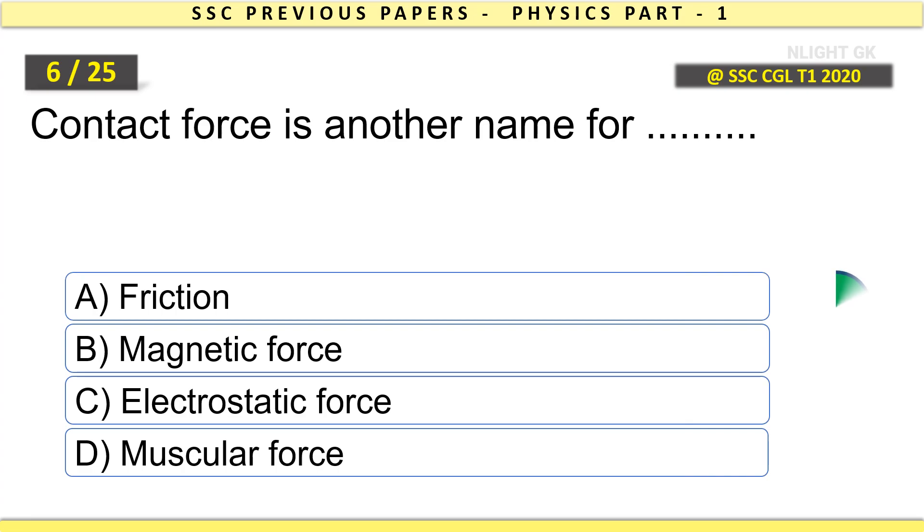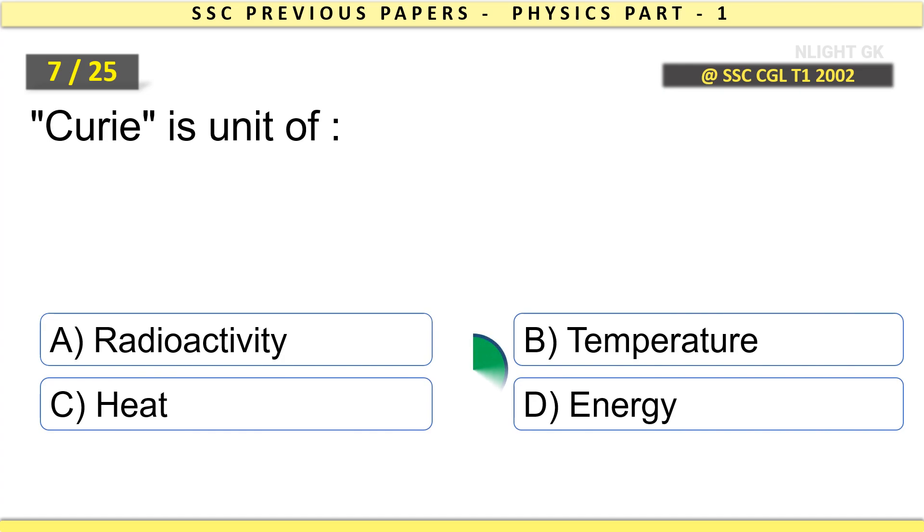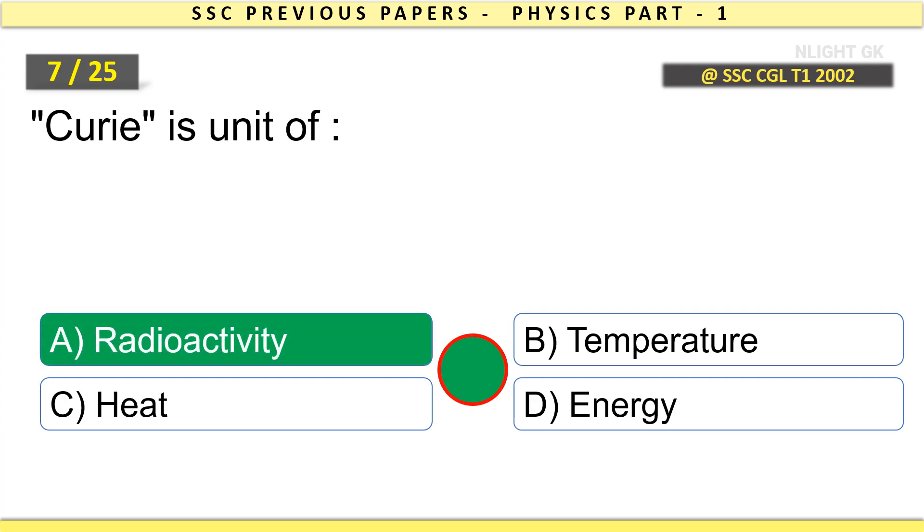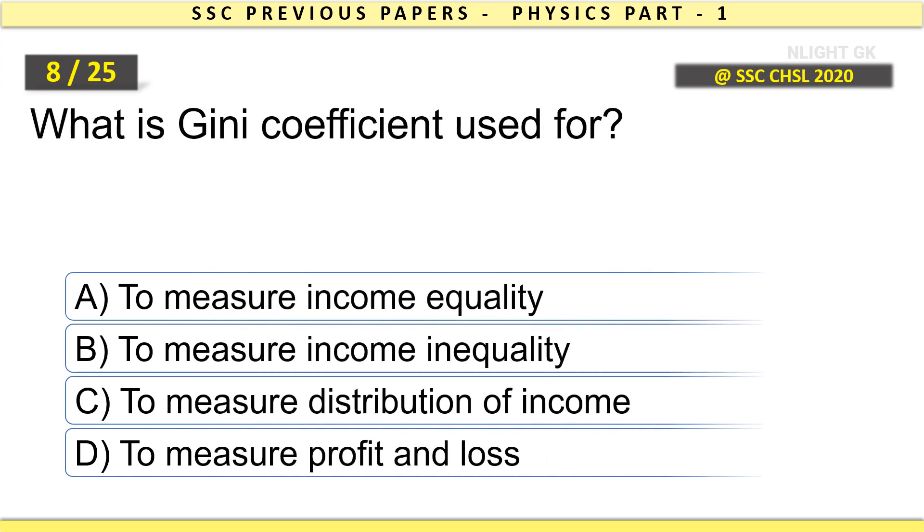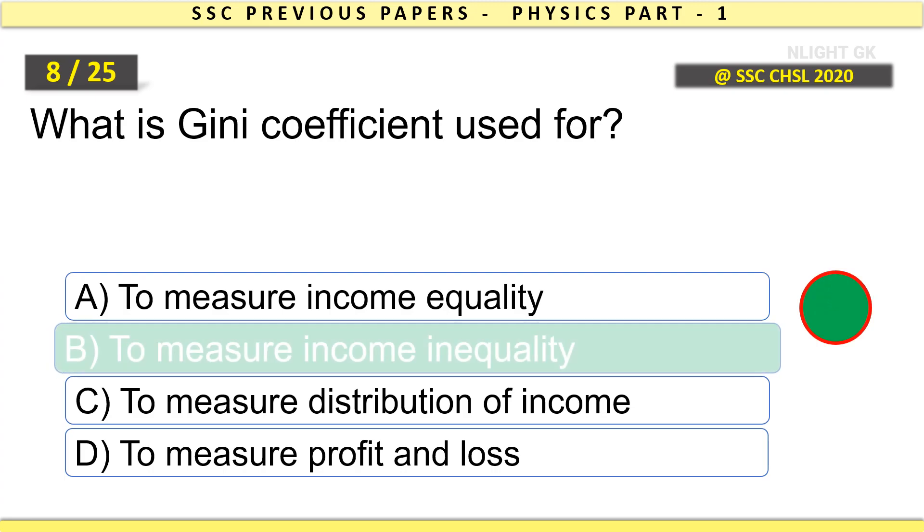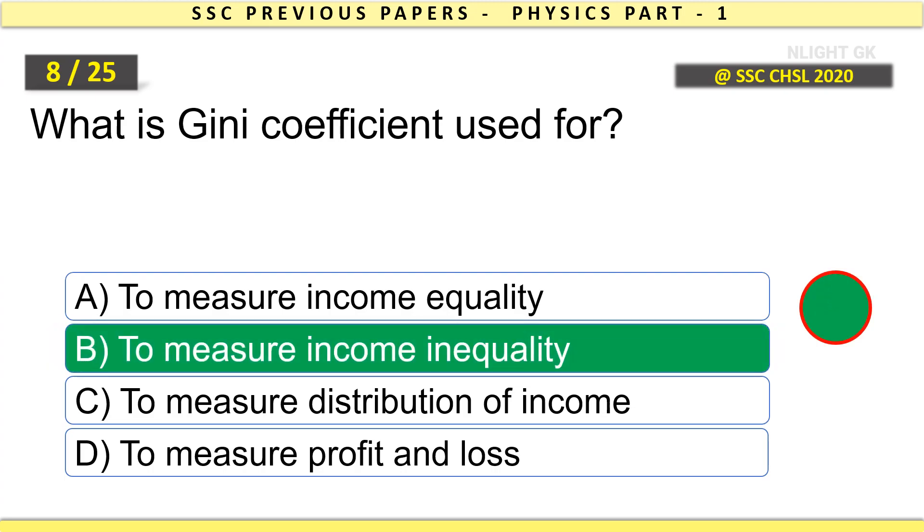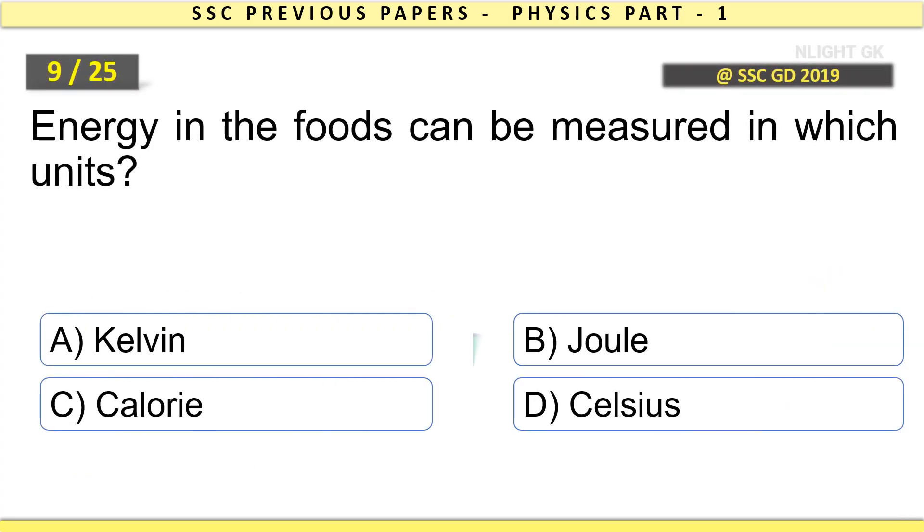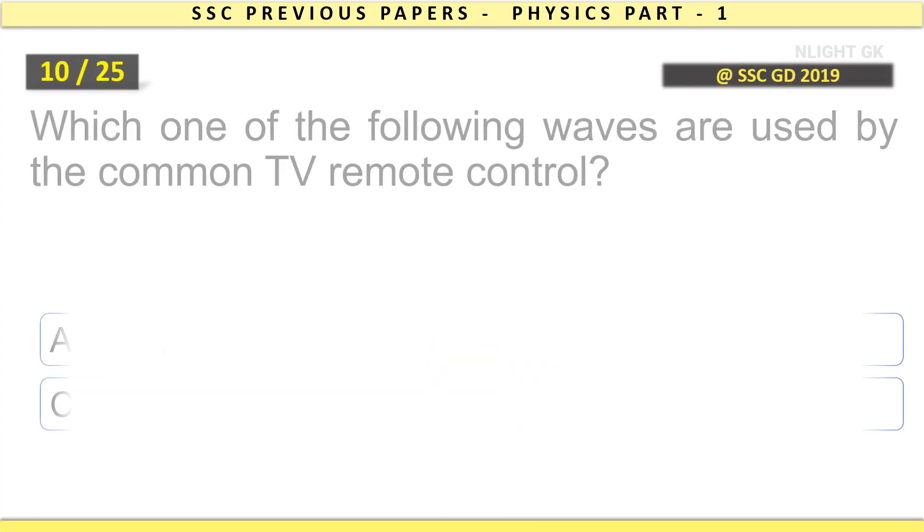Contact force is another name for friction. Curie is unit of radioactivity. What is Gini coefficient used for? To measure income inequality. Energy in the foods can be measured in which units? Calorie.